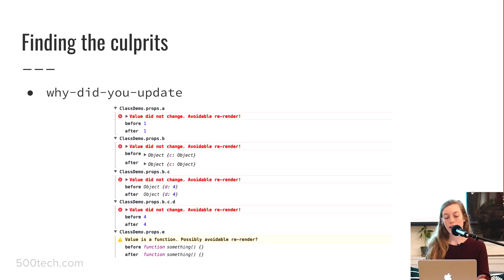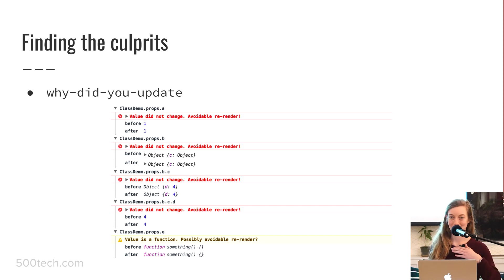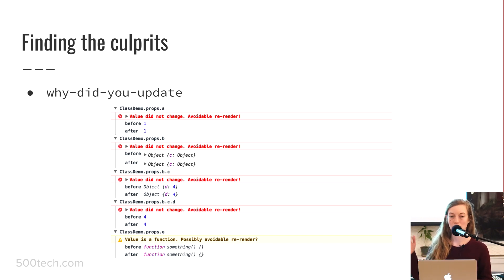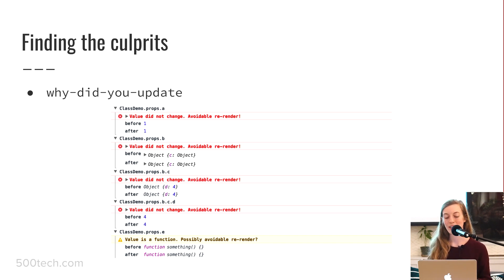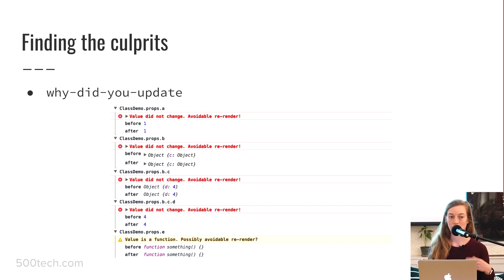The next tool is 'why did you update.' It's a very simple little package — you can just npm or yarn install it and insert one line into your React code that says 'whyDidYouUpdate(React).' You can configure it a bit, but basically it's going to print out to the console every time something renders when the props haven't changed. It's going to show the name of the component that's causing the issue, so you can see which components are showing up more often in your console. Those are the ones you'll want to start concentrating on.